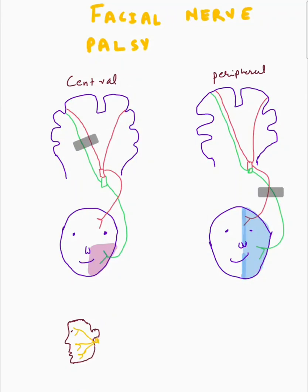Today we will be talking about the facial nerve palsy, and the difference between the central and the peripheral nerve palsies. First, let's talk about the general idea. The reason that these two are different is because of the different innervation of the upper and the lower face.